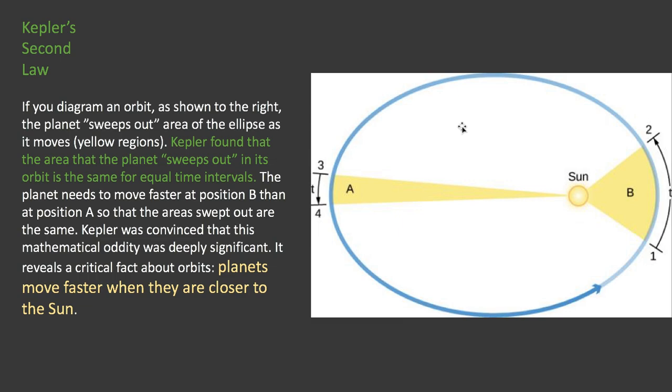On to the second law. If you diagram one of the orbits and you get an ellipse shape like this, you can imagine the planet moving around the ellipse. Now, as it's moving around, you can say it's sweeping out area inside the ellipse. So, let's say point A. It moves from here to here. It sweeps out this triangle, or what's almost a triangle, inside the ellipse. Moving around point B, going from here to here, it sweeps out this area of the triangle. So, that's what Kepler means by sweeps out the area.